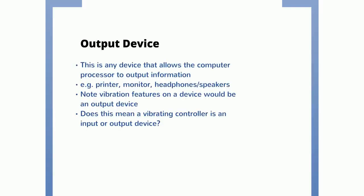An output device is any device that allows the computer processor to output information. So we've got printer, monitor, headphones, and speakers as output devices — the obvious ones. The vibration features on a device would also be considered an output, so if the Xbox controller has a vibration on it, then it's also an output device.